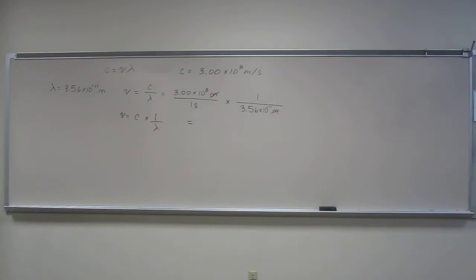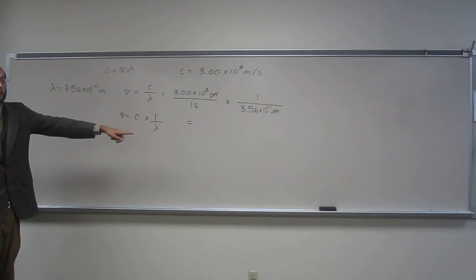Okay, so 3.00 times 10 to the 8th divided by 3.56 times 10 to the negative 11. And so the only number that was given to us in this problem is this one, so of course this is going to go to three significant figures.